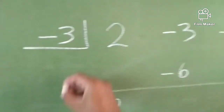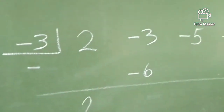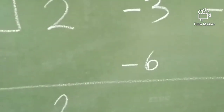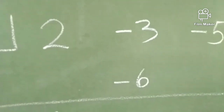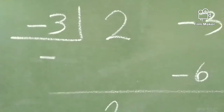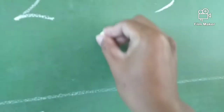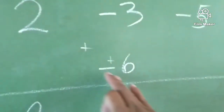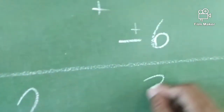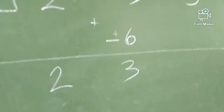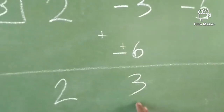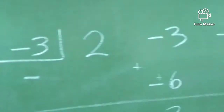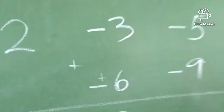Anong susunod na gagawin natin dito? Subtraction. Negative 3 minus 6. Since subtraction, change the sign of the subtrahend and proceed to addition. So, negative 3 plus positive 6. We have positive 3. Again, positive 3 times negative 3 is equals to negative 9.